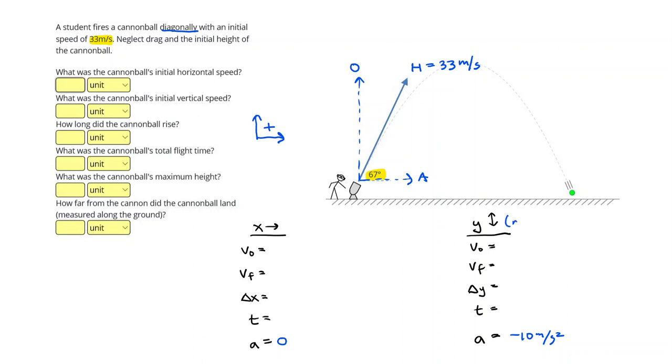For y, I'm going to look at the rise only, which means that when this cannonball reaches its highest point, that final velocity is going to be zero. Let me write that with a pen.